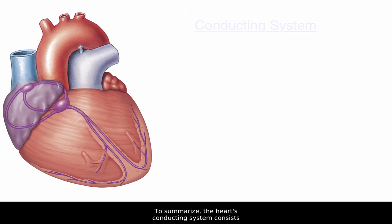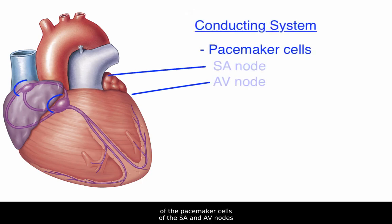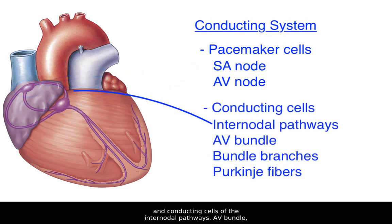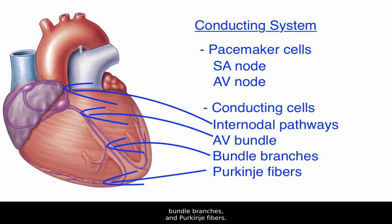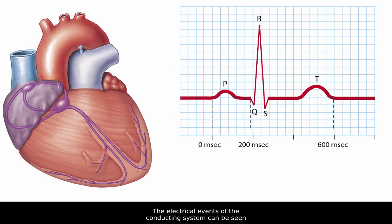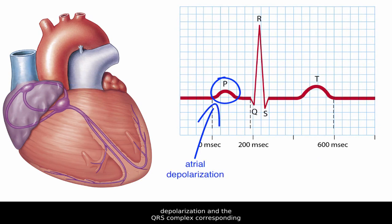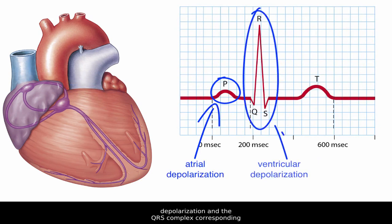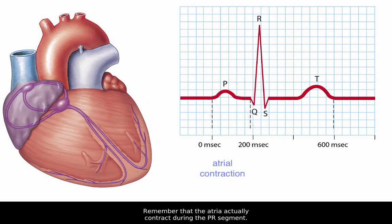To summarize, the heart's conducting system consists of the pacemaker cells of the SA and AV nodes, and conducting cells of the internodal pathways, AV bundle, bundle branches, and Purkinje fibers. The electrical events of the conducting system can be seen on an electrocardiogram, with the P wave representing atrial depolarization and the QRS complex corresponding to ventricular depolarization. Remember that the atria actually contract during the PR segment.